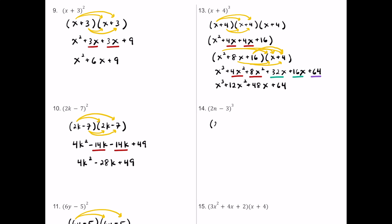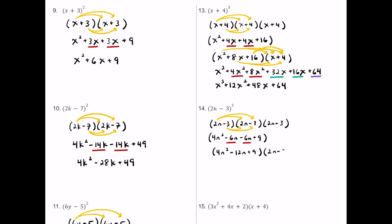For number fourteen, we have 2n minus 3 cubed, written as 2n minus 3 times 2n minus 3 times 2n minus 3. Again, let's use the first two: 2n times 2n is 4n squared. 2n times negative 3 is negative 6n. Negative 3 times 2n is another negative 6n. Negative 3 times negative 3 is positive 9. Combining gives 4n squared minus 12n plus 9.